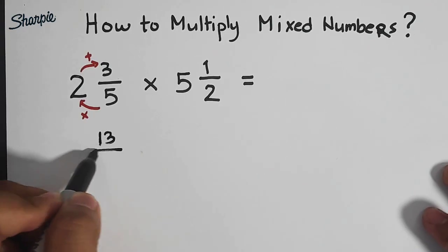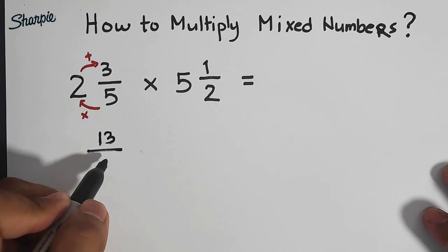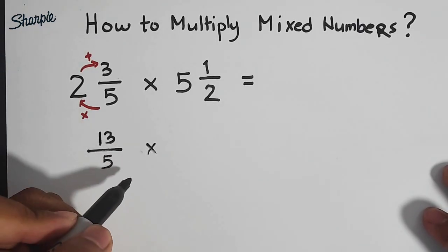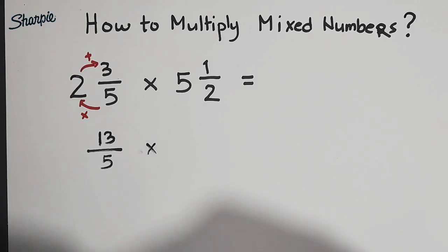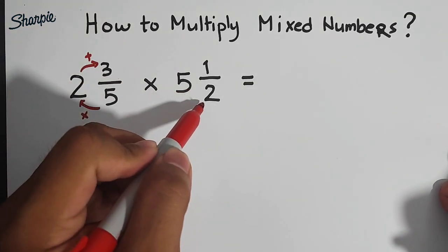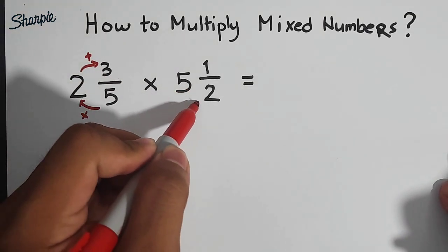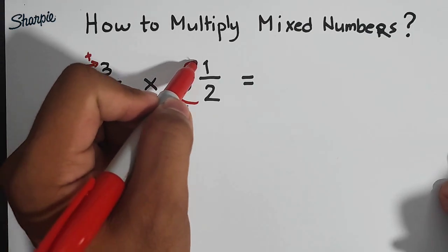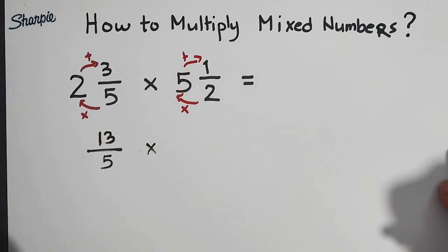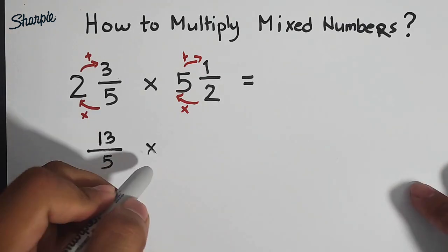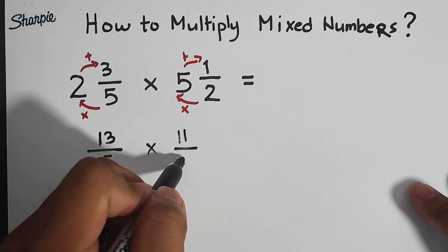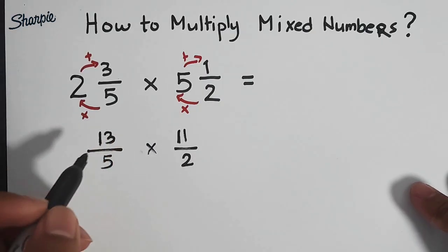Over 5. Copy your original denominator, which is 5. Now for the second mixed number, 2 times 5, that is 10, plus 1, that is 11. So our new fraction is 11 over 2. After this, as you can see, we're done converting the fractions.